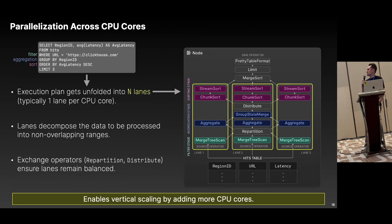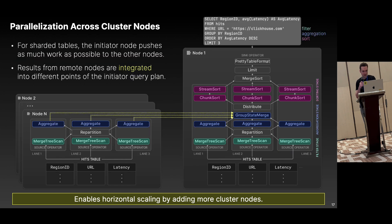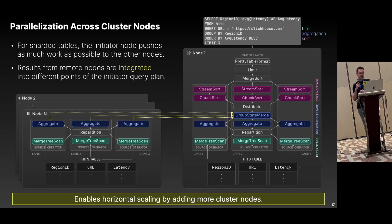We parallelize across CPU cores by splitting the query pipeline into multiple independent lanes; data is processed mostly independently, and we may repartition if distribution between lanes is non-uniform. Typically the number of lanes equals the number of CPU cores. We also parallelize across multiple servers for distributed data processing — the initiator node pushes as much work as possible to other nodes depending on the query plan and combines the results, so processing capacity can be scaled horizontally by adding more cluster nodes.